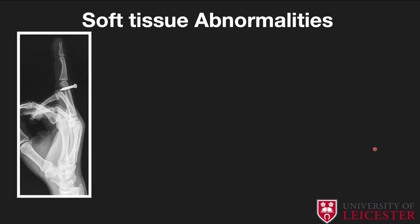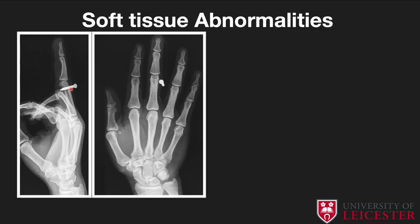Finally, regarding soft tissue abnormalities: always remember the importance of two views and of assessing tissue densities. Look for foreign bodies — here a nail through the third proximal phalanx near its neck. Metallic foreign bodies are very radio-dense and straightforward to identify. Also assess for hematoma or soft tissue swelling. After assessing the bones, always look at the soft tissues.